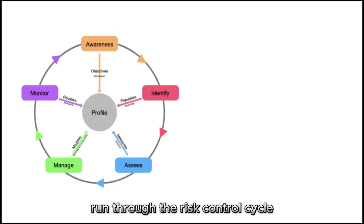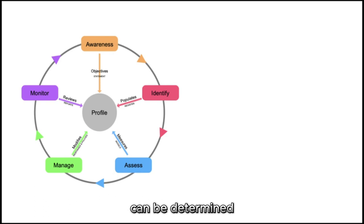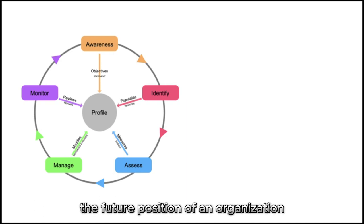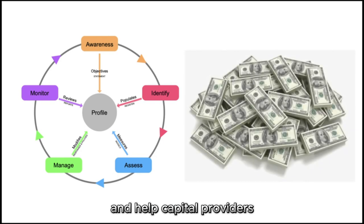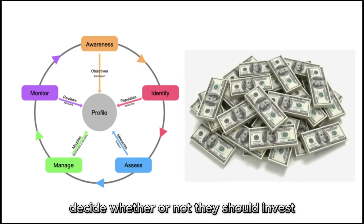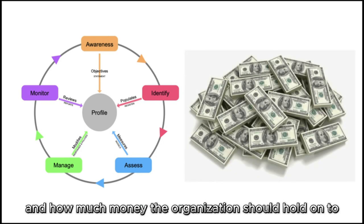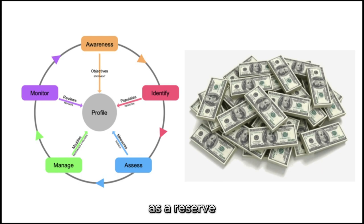Actuaries run through the risk control cycle so that an organization's risk profile can be determined. This can be used to project the future position of an organization and help capital providers decide whether or not to invest, and how much money the organization should hold as a reserve in case the dangers manifest.